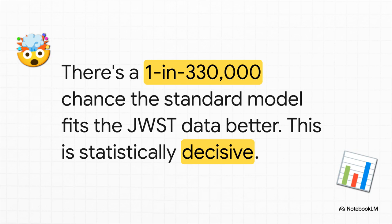To put that number in perspective for you, it means the odds of our standard model being a better explanation for what JWST is seeing are about 1 in 330,000. Statisticians don't just call this strong evidence. They call it decisive evidence. The data from the early universe is pretty clearly telling us it prefers a model where the laws of physics were different back then.